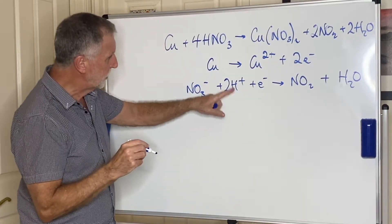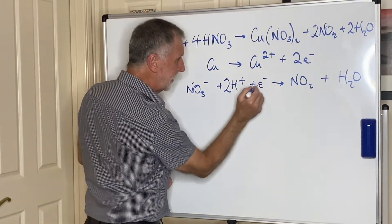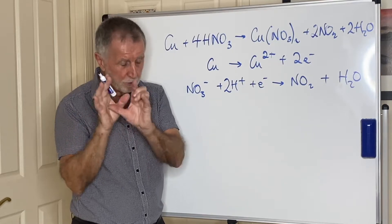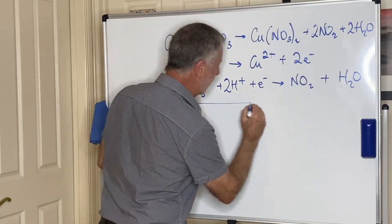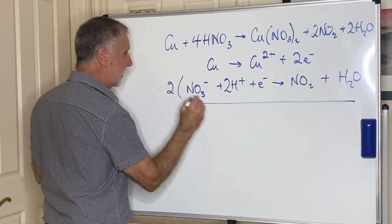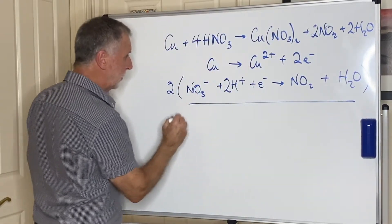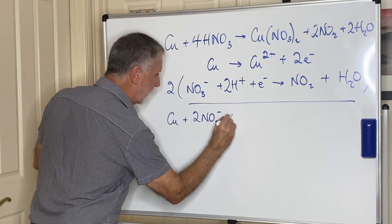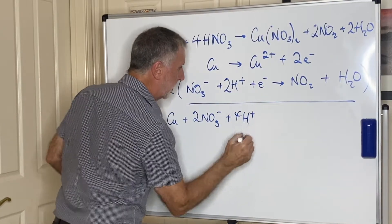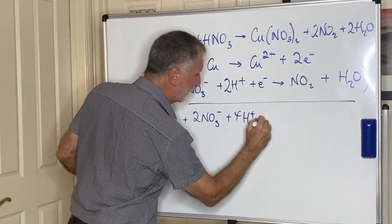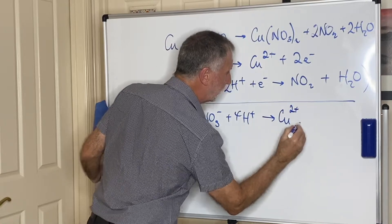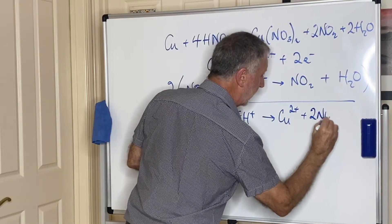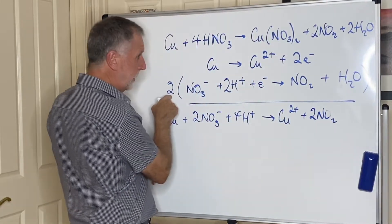To combine the two half equations, you need to cancel the electrons: any electrons lost by one must be gained by the other, with none left over. The copper equation releases 2e⁻, so you need to double the entire nitrate reduction equation. Putting them together gives: Cu + 2NO3⁻ + 4H+ → Cu2+ + 2NO2 + 2H2O, with the two electrons canceling on each side.